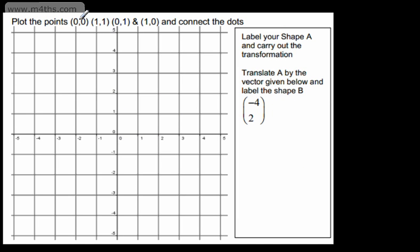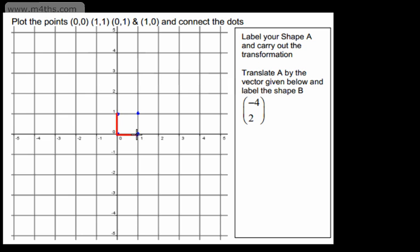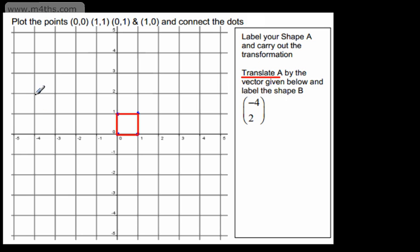Let's look at another example. We've got a square with points (0,0), (1,1), (0,1), and (1,0). That's a nice little square. As stated, it will be very rare that you have to actually draw these yourself — generally they will already be on the grid. Label it shape A, then translate it by the vector (-4, 2): left by 4, up by 2. If I take this point, going left by 4 and then up by 2 maps it to a new position. I just translate all points accordingly.